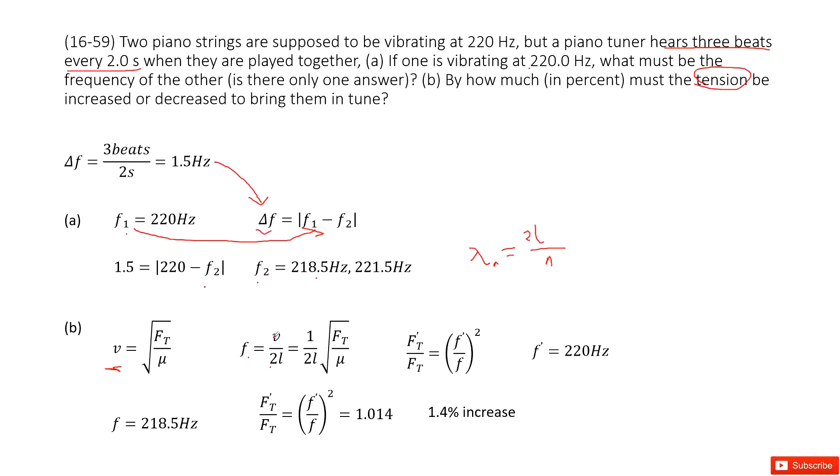So this frequency is v divided by lambda, so v divided by 2L. Now we input the v inside, we get a function look like this one. Now we look at this function: 1 over 2L is constant, mu is constant. So that means the frequency is proportional to the square root of FT, right?